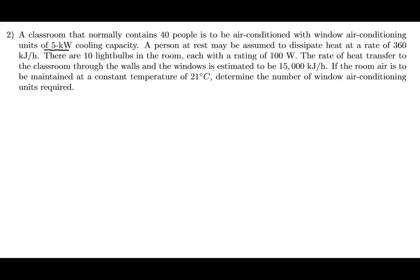A person at rest may be assumed to dissipate heat at a rate of 360 kilojoules per hour. There are also 10 light bulbs in the room, each with a rating of 100 watts. The rate of heat transfer to the classroom through the walls and windows is estimated to be 15,000 kilojoules per hour. If the room air is to be maintained at a constant temperature of 21 degrees Celsius, determine the number of window air conditioning units required.